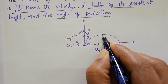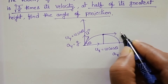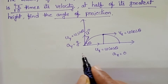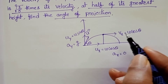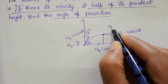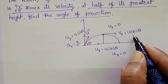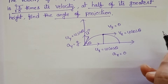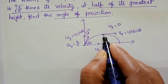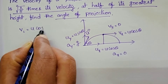At maximum height, the horizontal component of velocity remains u cos theta, since there is no change in velocity along the horizontal direction. But the vertical component of velocity at this point equals 0. So at maximum height, the velocity v1 equals u cos theta.